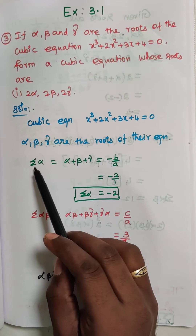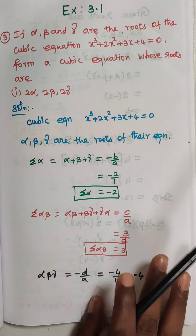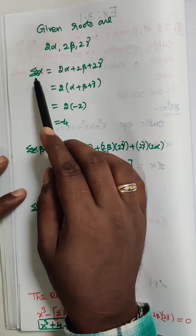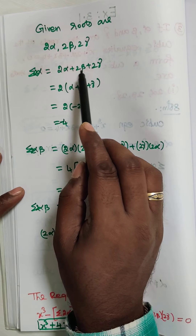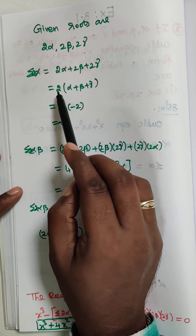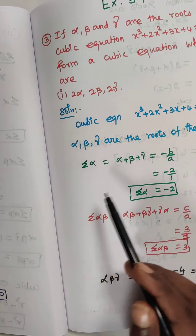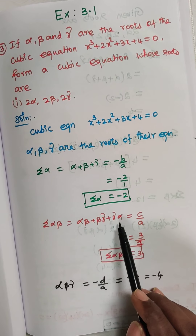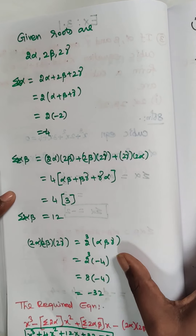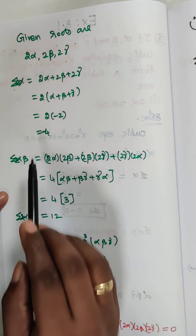Now we are going to find summation 2α and 2α·2β and 2α·2β·2γ. The given roots are 2α, 2β, 2γ. Summation 2α equals 2α + 2β + 2γ. Taking 2 outside, we get 2 × (α + β + γ). We already know alpha + beta + gamma equals minus 2, so 2 × (−2) equals minus 4. That is summation 2α.